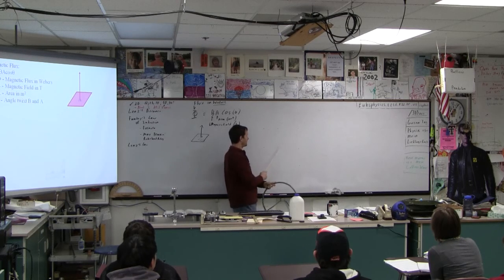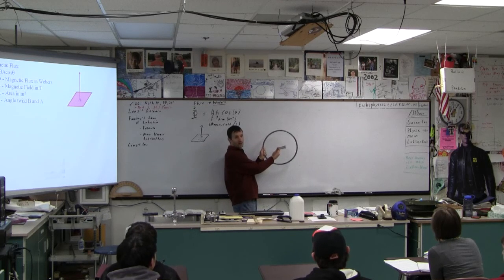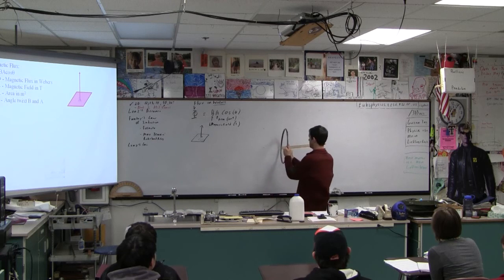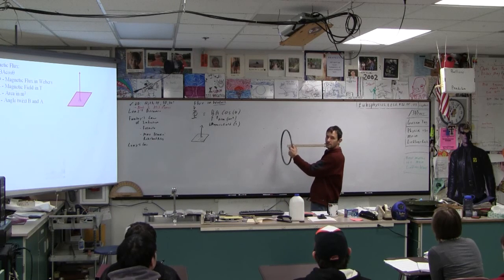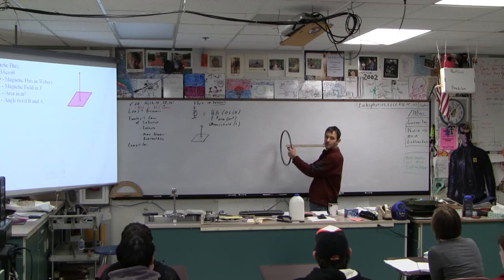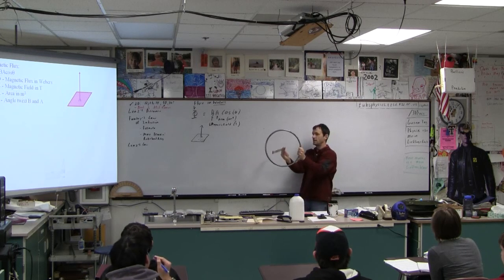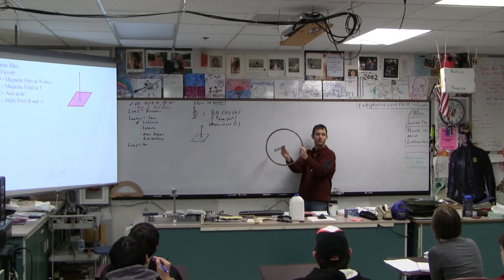Zero, because this magnetic field is out of the page. This arrow is also out of the page. Now the angle is 90. Cosine of 90 is zero. So we have zero flux right now. And now the angle is one angle.